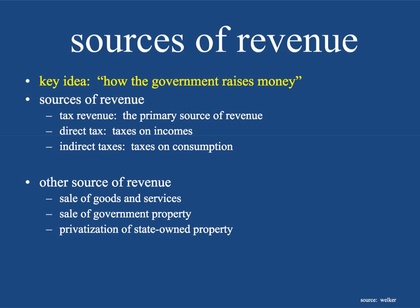Let's talk about the sources of revenue — this is how the government raises money. There are many ways the government can receive money, but tax revenue is the primary source. Whether you go and buy something and it's a consumption tax, which is an indirect tax, or a direct tax — they're all taxes and this is the main source of revenue for any government.